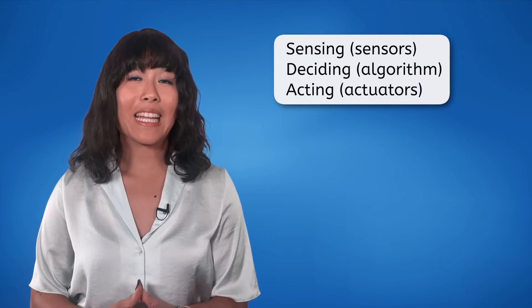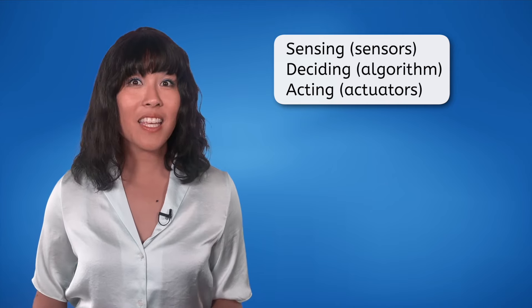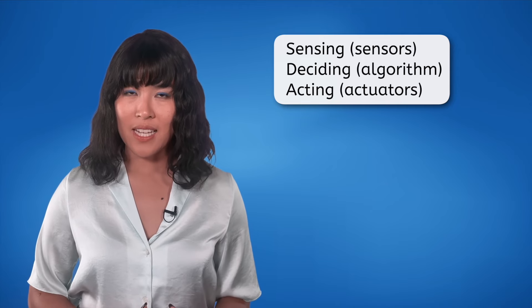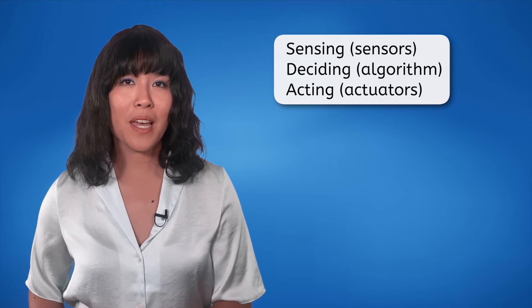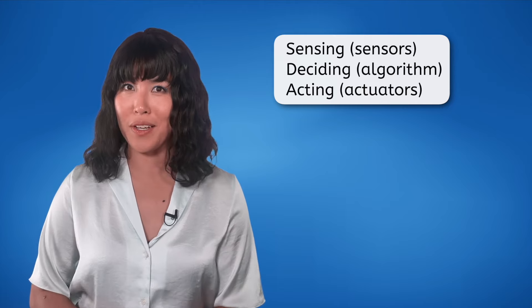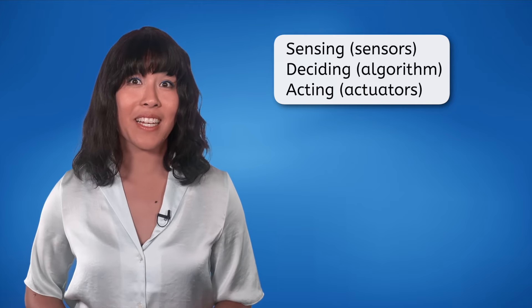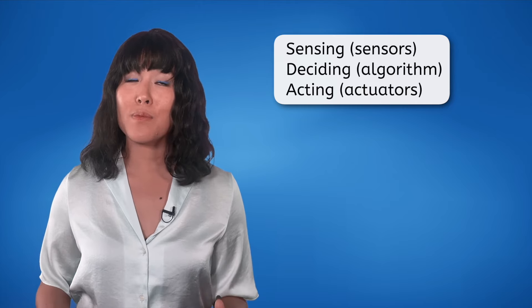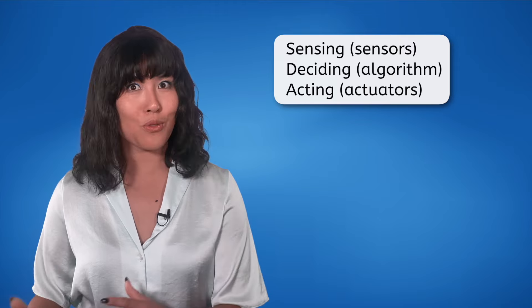Remember, creating automata is all about sensing the environment using sensors, deciding using an algorithm, and acting using actuators, all in small calculated steps. Each decision is based on the latest data the sensors provide. Automation and robotics, while advanced, boil down to some fundamental principles.